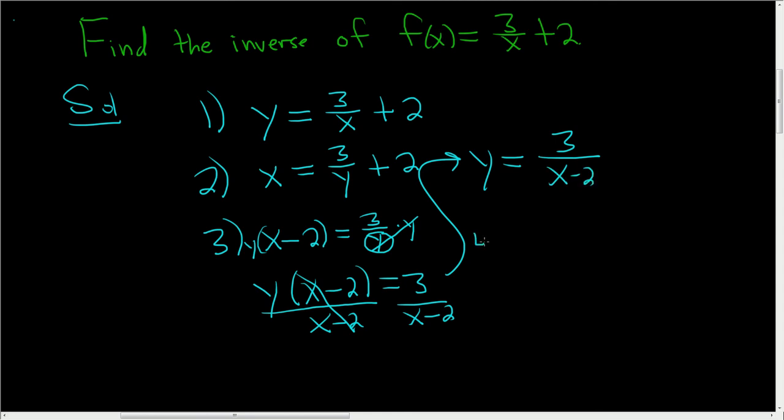The fourth step is to write down the inverse. So f inverse of x is equal to 3 over x minus 2. So that's how you find the inverse of f of x equals 3 over x plus 2.